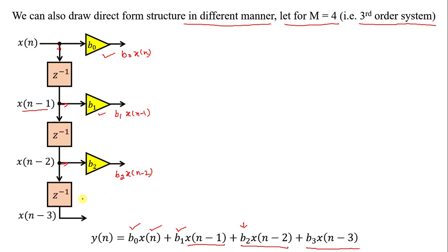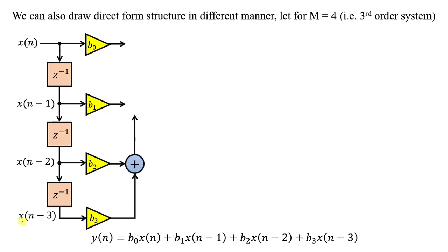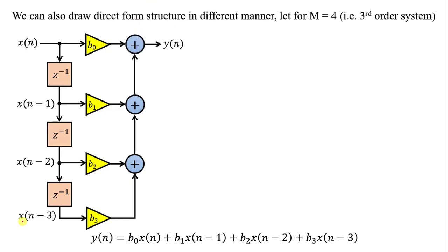Continuing, the next term is X(N−3) with multiplying factor B3. Now all these terms need to be added together — first addition, second addition, third addition. Adding all the terms: B0·X(N), B1·X(N−1), B2·X(N−2), and B3·X(N−3) gives the output Y(N). The previous figure was horizontal and this is the vertical diagram. This is again the direct form of the FIR filter.